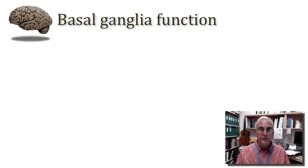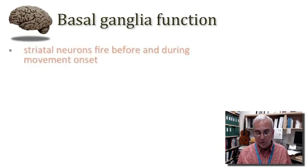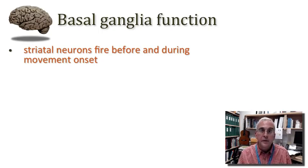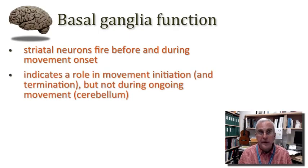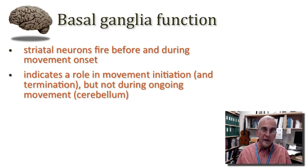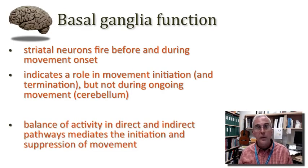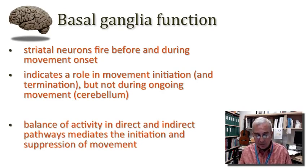To set the stage for this discussion of abnormal function, let's first recap what we've understood about normal basal ganglia function. The neurons of the striatum begin to fire just before and during the onset of movement, suggesting that the role of the basal ganglia is the initiation and suppression of movement. The basal ganglia are much less critical during the ongoing expression of a motor program — that's the function of the cerebellum. It's the balance in activity between the direct and the indirect pathways that mediates the initiation and suppression of movement.